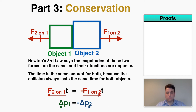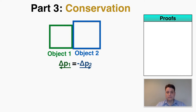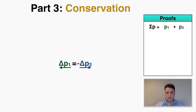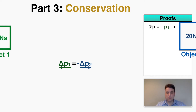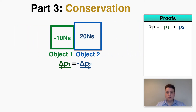So this always has to be true: whenever one object experiences an impulse, the other object always has to experience the exact same amount of impulse but in the opposite direction. As an example of what this would look like, let's say we have two objects — one moving with negative 10 Newton-seconds and one with 20 Newton-seconds — and I'm going to use a new concept in the proofs box: the total momentum of the system.